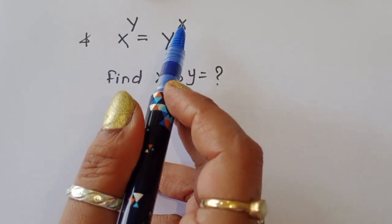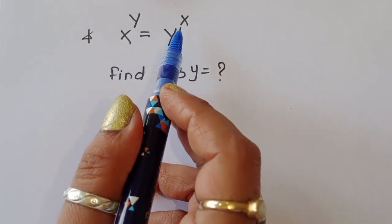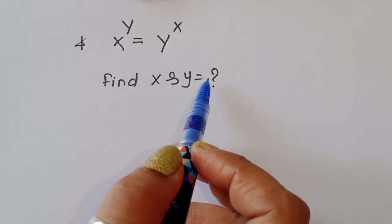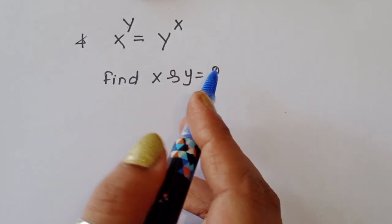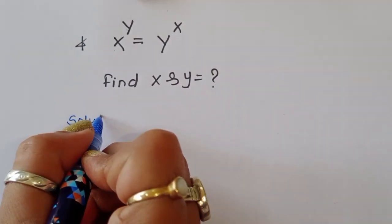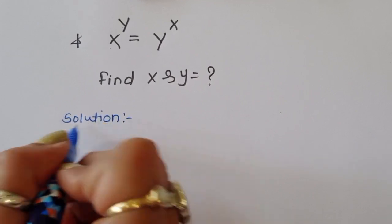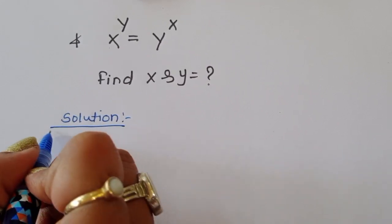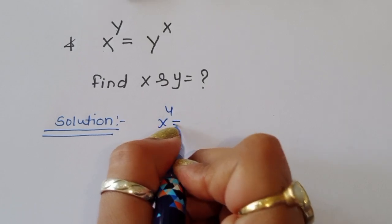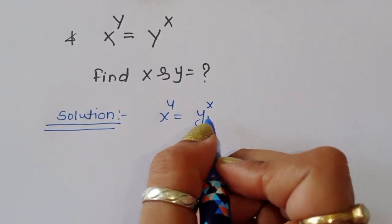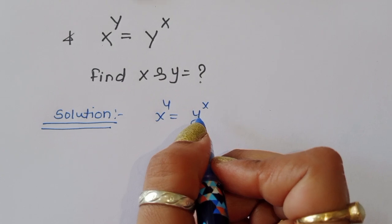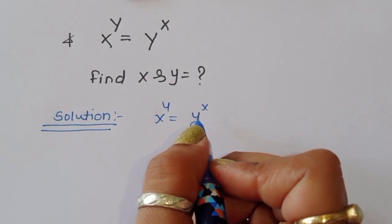x to the power y is equal to y to the power x. We have to find out the value of x and y. Let's see how we can find out the value of x and y.